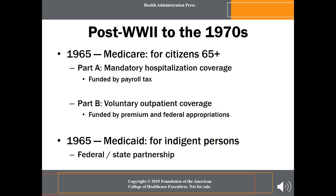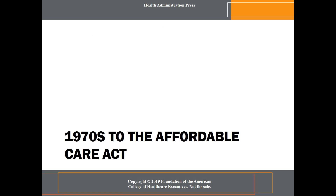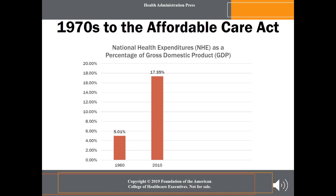Despite policymakers' concerns about dramatic increases in health care costs from the 1970s through the 1990s, they could not seem to control them. Medicare and Medicaid did not address the issue of national health care expenditures, but rather focused on ameliorating the impact of the cost of care on specific population groups — the elderly and the poor — and have become major contributors to national health care expenditures. These two government programs have been among the leading causes of healthcare cost increases.